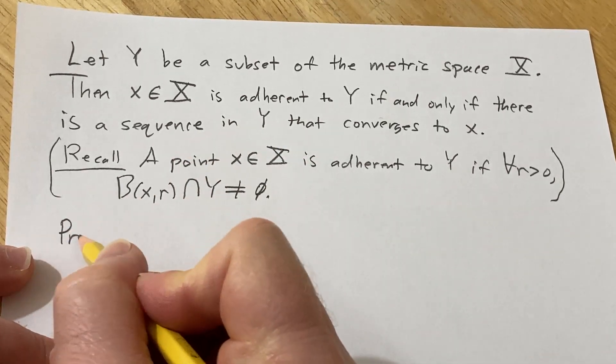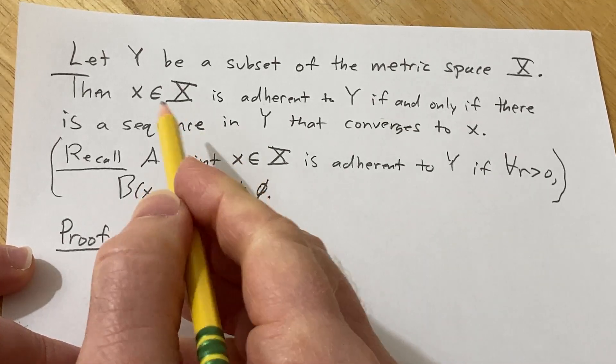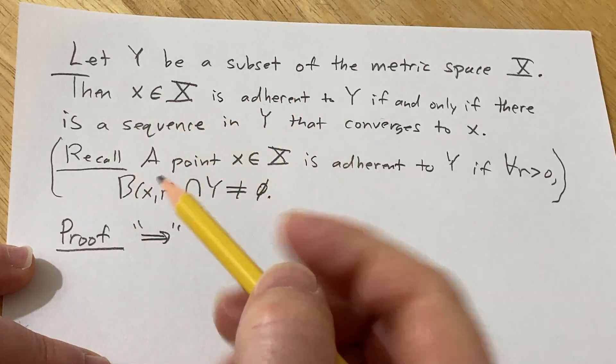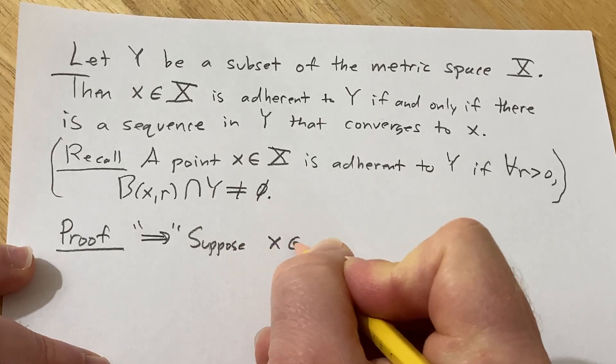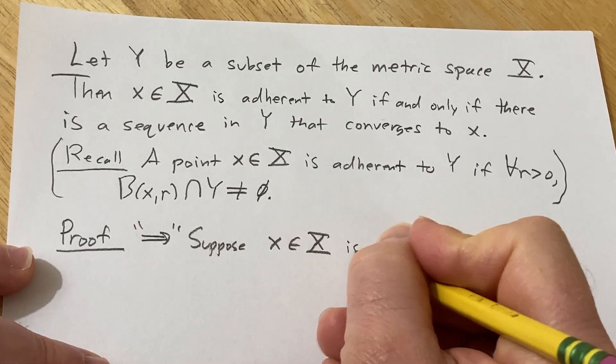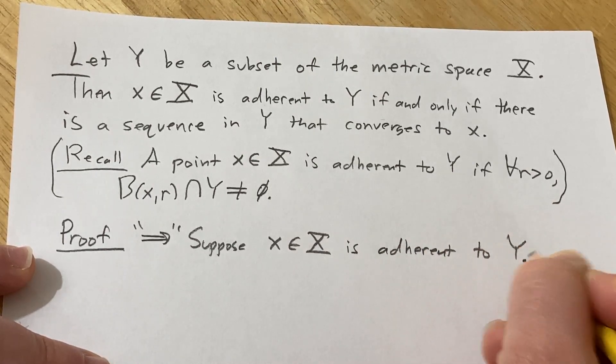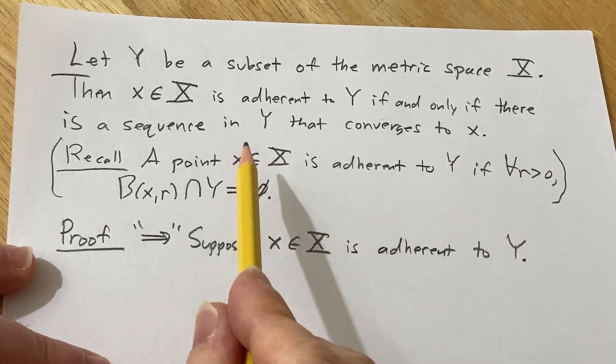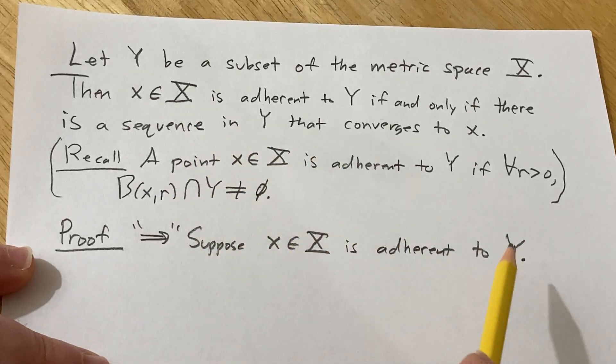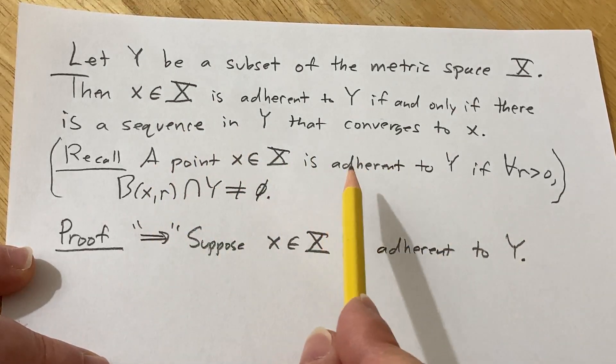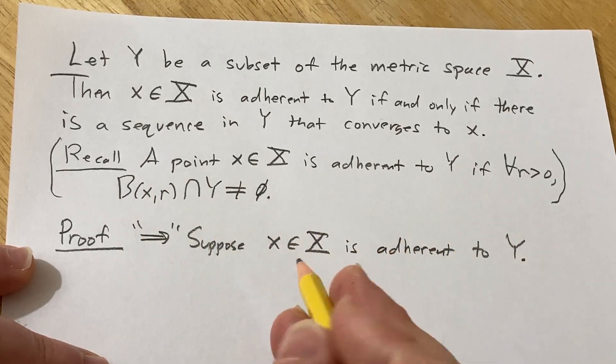Alright, let's just jump into it. Proof. So let's do this direction first. So we'll start by assuming that we have a point x in X that's adherent to Y. So I'll say suppose x in capital X is adherent to Y. And now we have to basically give a constructive proof. We have to construct a sequence in Y that converges to x. So we somehow have to use the fact that it's adherent to Y.